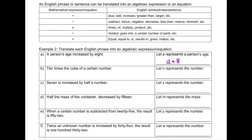Part B: 10 times the cube of a certain number. Let N represent the number, so we write 10 times the cube of N. Part C: 7 is increased by half of a number. Let X represent the number, so we write 7 increased by half of X.